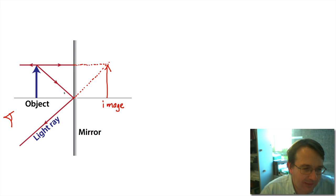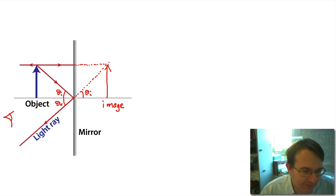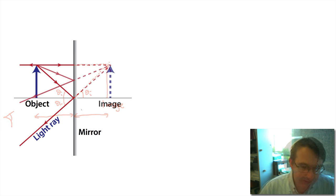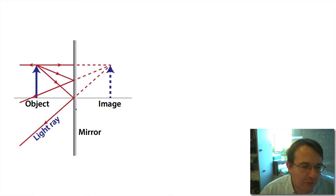These two rays appear to come from the tip of the image. If we look at the triangle formed, this is the angle of incidence for one ray and this is the angle of reflection, which are equal. The opposite angle is also equal to the angle of incidence. So the image travels back until it reaches the same height, meaning the distance of the image behind the mirror equals the distance of the object in front of the mirror. We can tidy this up and add an extra ray to reinforce the point.